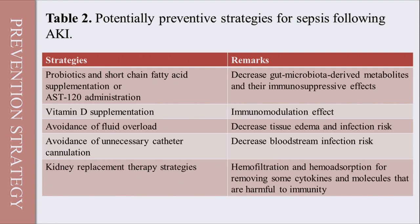For patients who develop sepsis following AKI, prevention strategies include probiotics and short-chain fatty acids or AST-120 administration, which decrease gut microbial-derived metabolites and their immunosuppressive effects. Vitamin D supplementation is recommended for its immunomodulation effect, avoidance of fluid overload to reduce infection risk, avoidance of unnecessary catheter cannulation to prevent bloodstream infection, and renal replacement strategies such as hemofiltration and hemoadsorption for removing harmful cytokines and molecules.